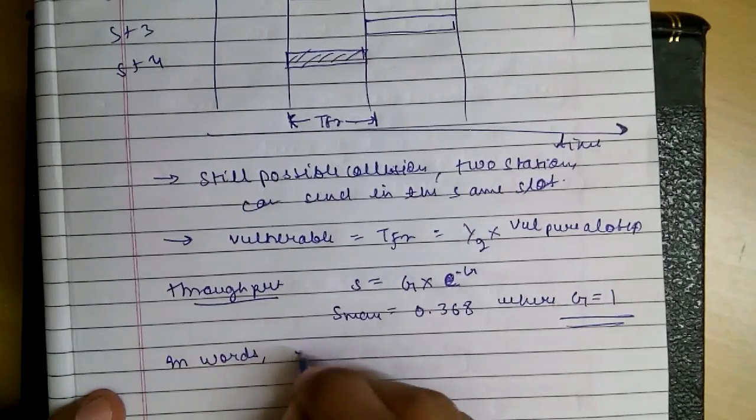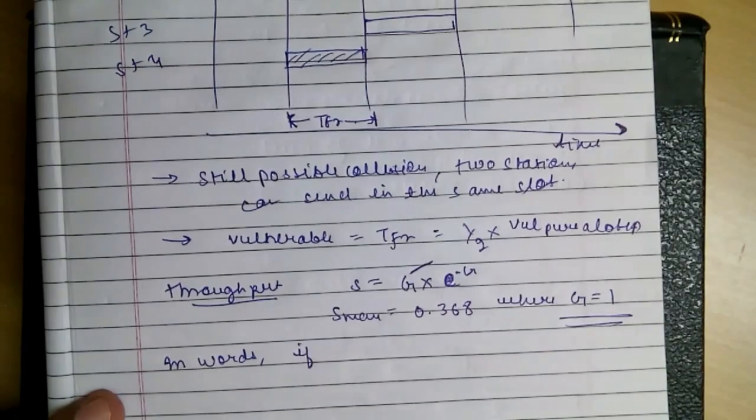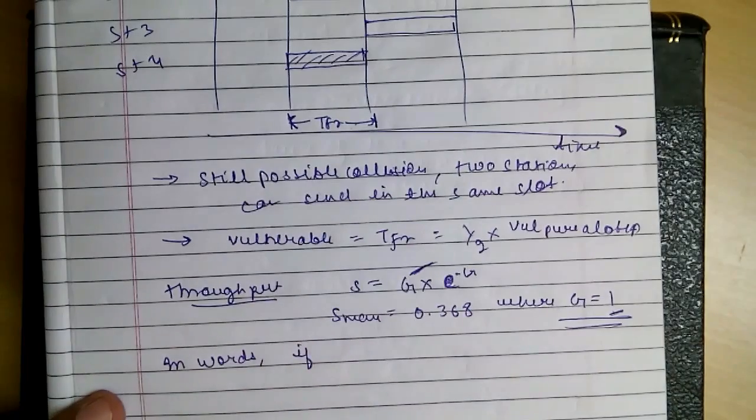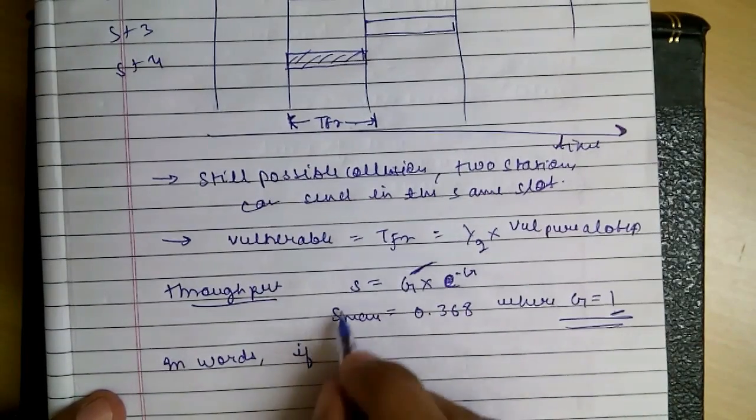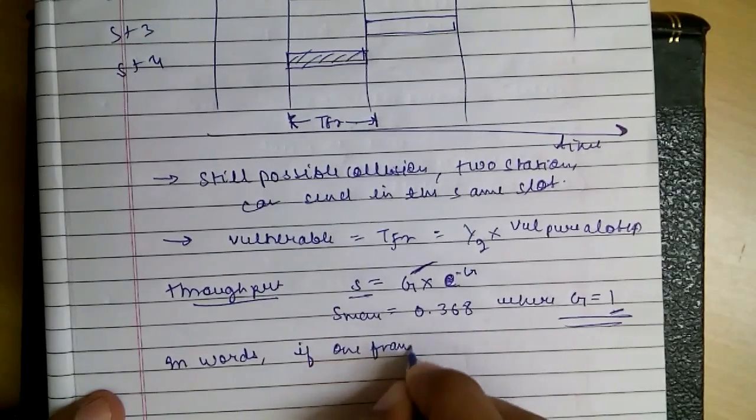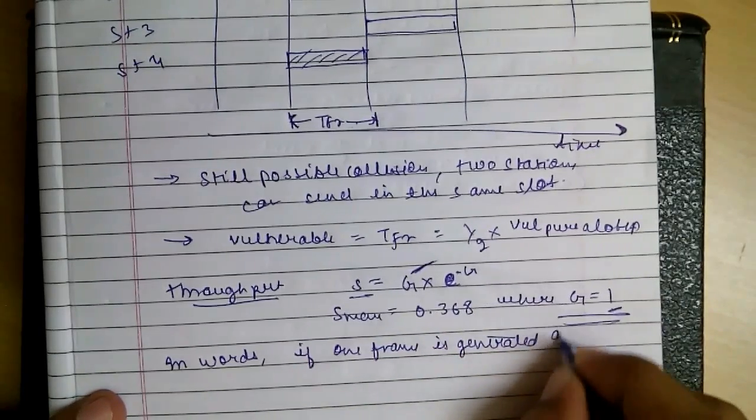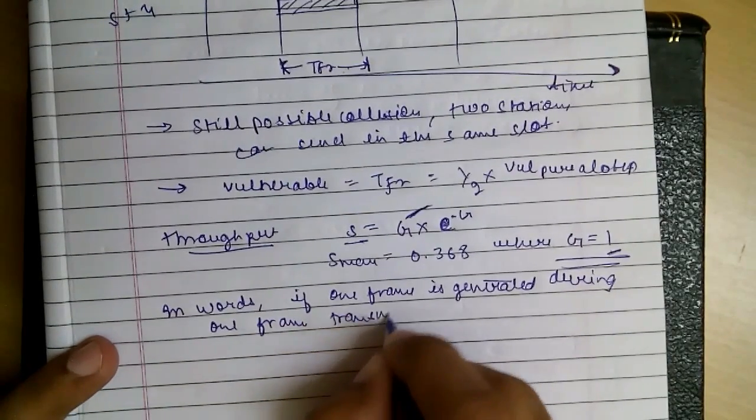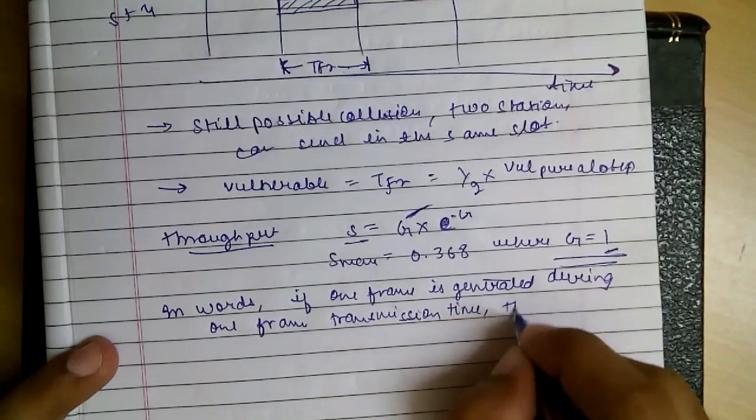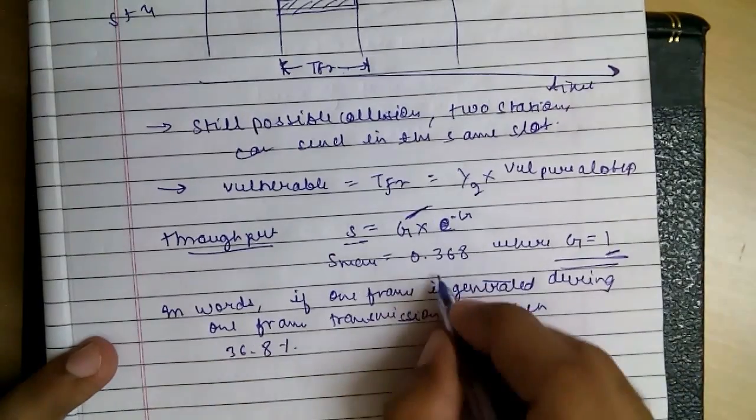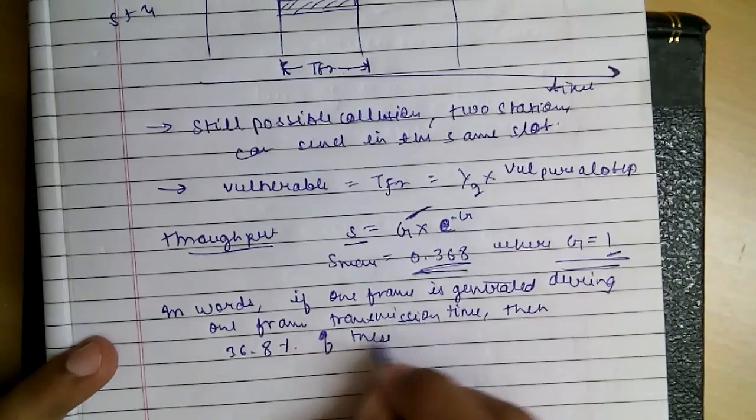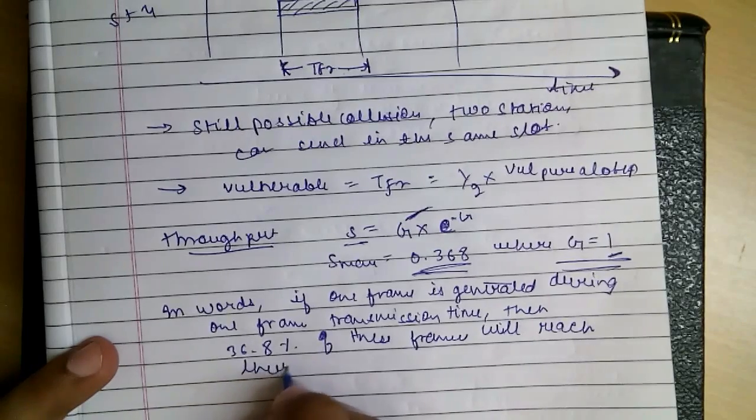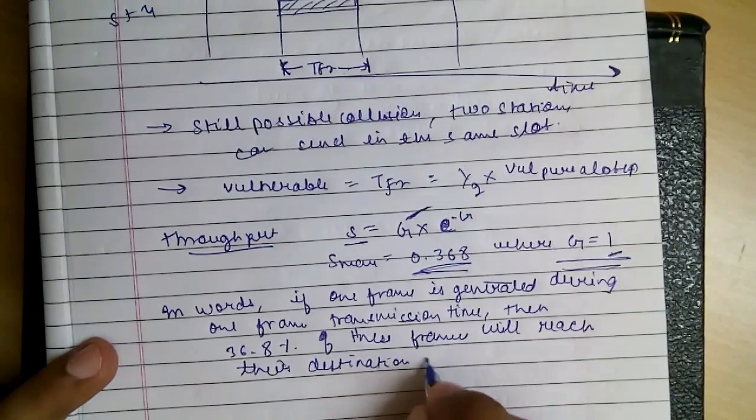In words, this means if this is the number of frames generated per transmission time, and if one frame is generated per transmission time, i.e., per TFR, there will be a maximum value of throughput. So if one frame is generated during one frame transmission time, then 36.8% of these frames will reach their destination successfully.